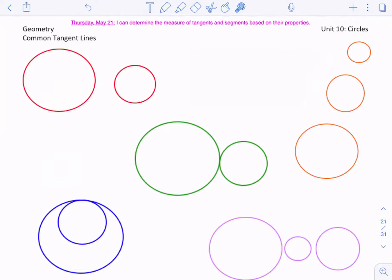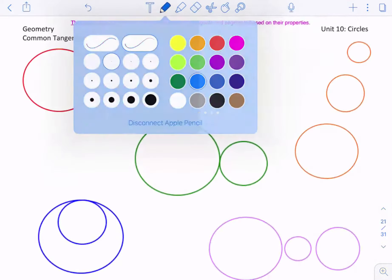Our goal for today is that we can determine the measure of tangents and segments based on their property. So we really are going to be focusing on a bunch of tangent lines today. Maybe we need a little refresher on what a tangent line is.